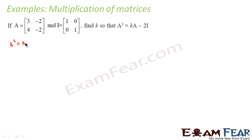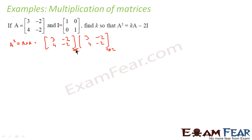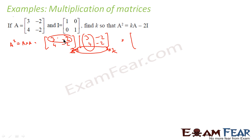A² is nothing but A into A, that is [[3, -2],[4, -2]] into [[3, -2],[4, -2]]. Let's first check if multiplication is possible. This matrix is 2×2 and this matrix is 2×2, so 2 matches — multiplication is possible. The final result will be 2×2. The first element (1st row, 1st column) is 3×3 = 9 plus (-2)×4 = -8.